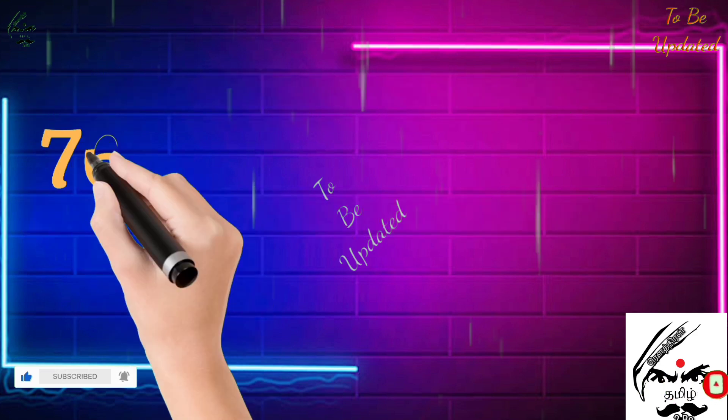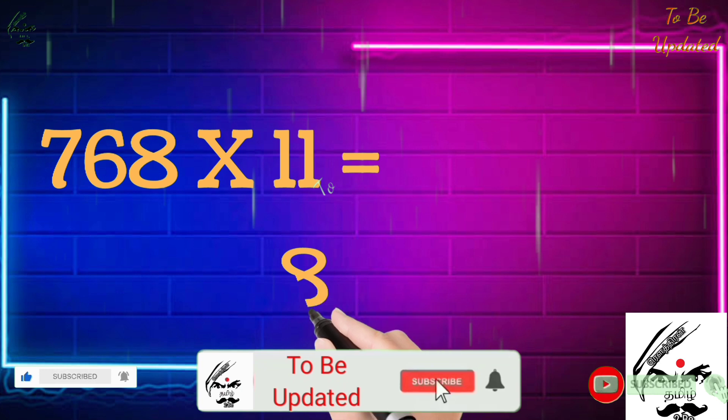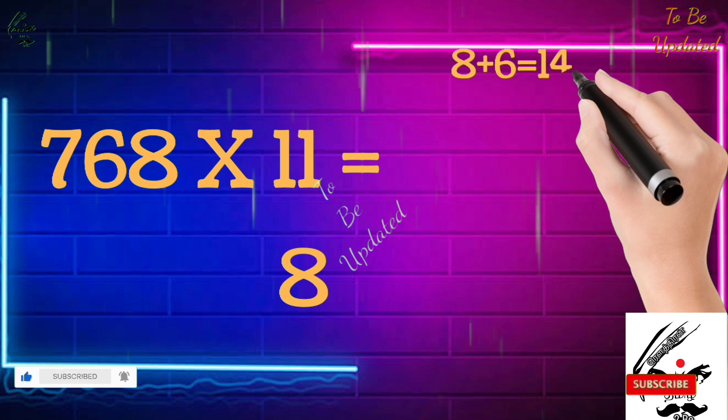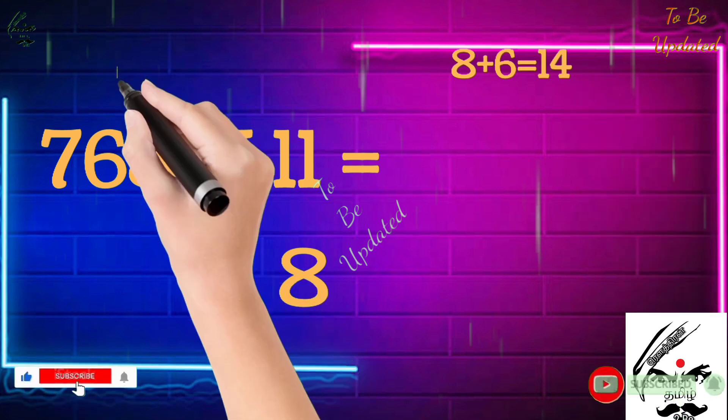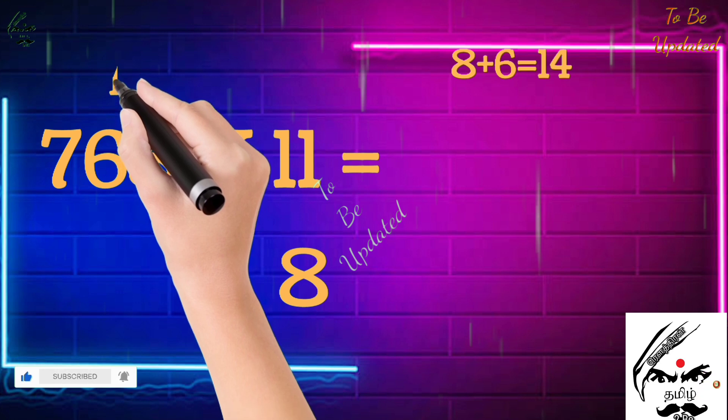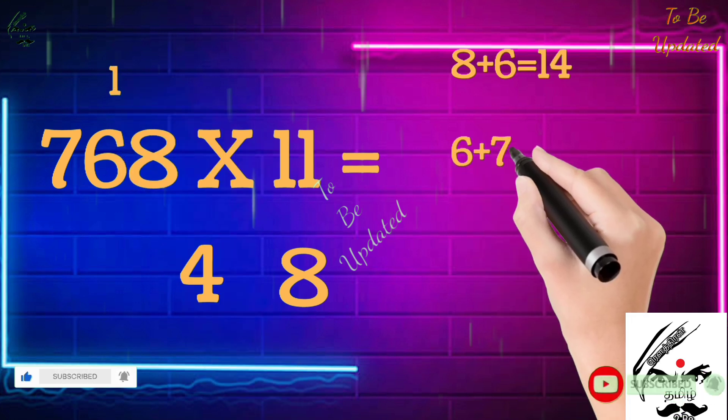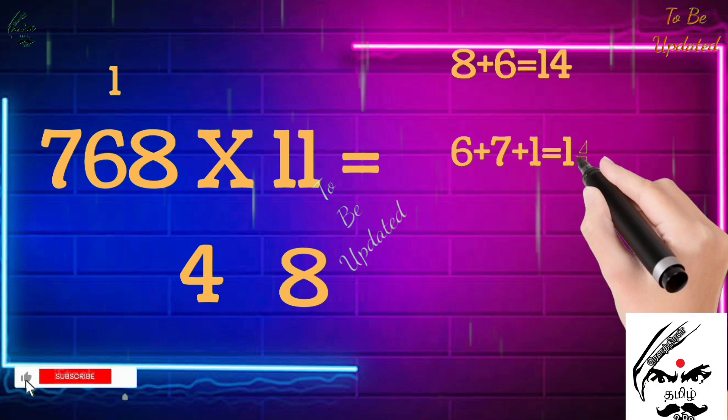For example, now they have given the number 768 times 11. Write the unit digit as it is. Now what is the previous digit? 6. So 8 plus 6 we get 14. Now pay full attention. We are going to write the 4 down and we are going to take 1 as a remainder.